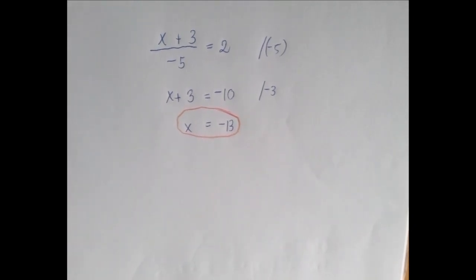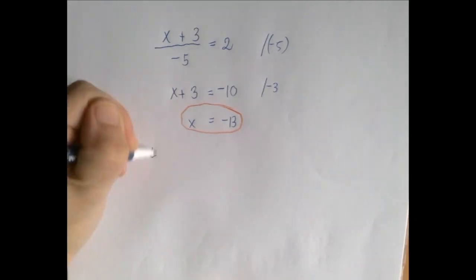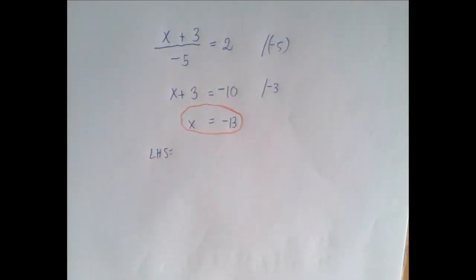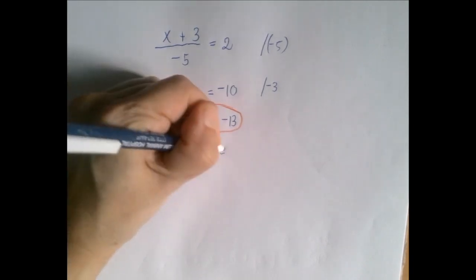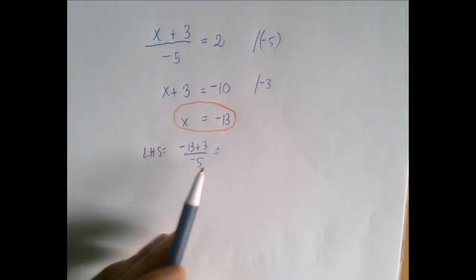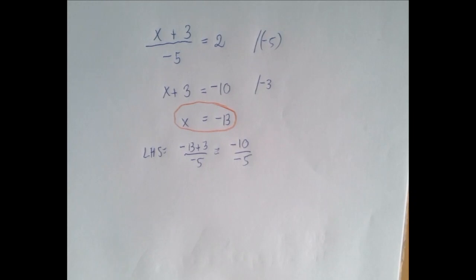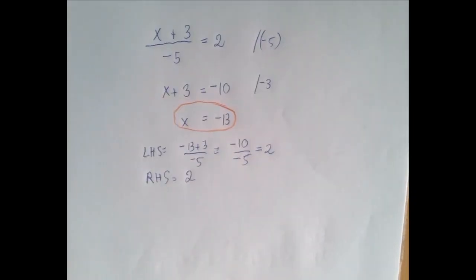As always, we should check. So if x is negative 13, then the left-hand side is negative 13 plus 3 over negative 5. Negative 13 plus 3 is negative 10, and negative 10 divided by negative 5 is positive 2. The right-hand side is simply just 2.